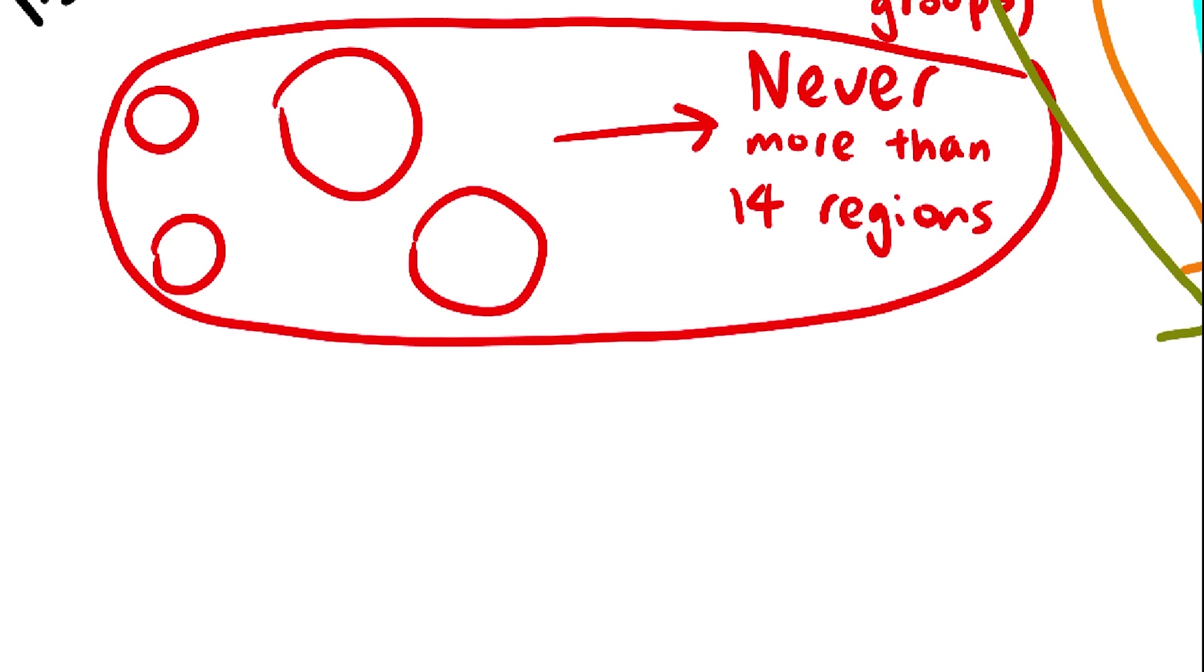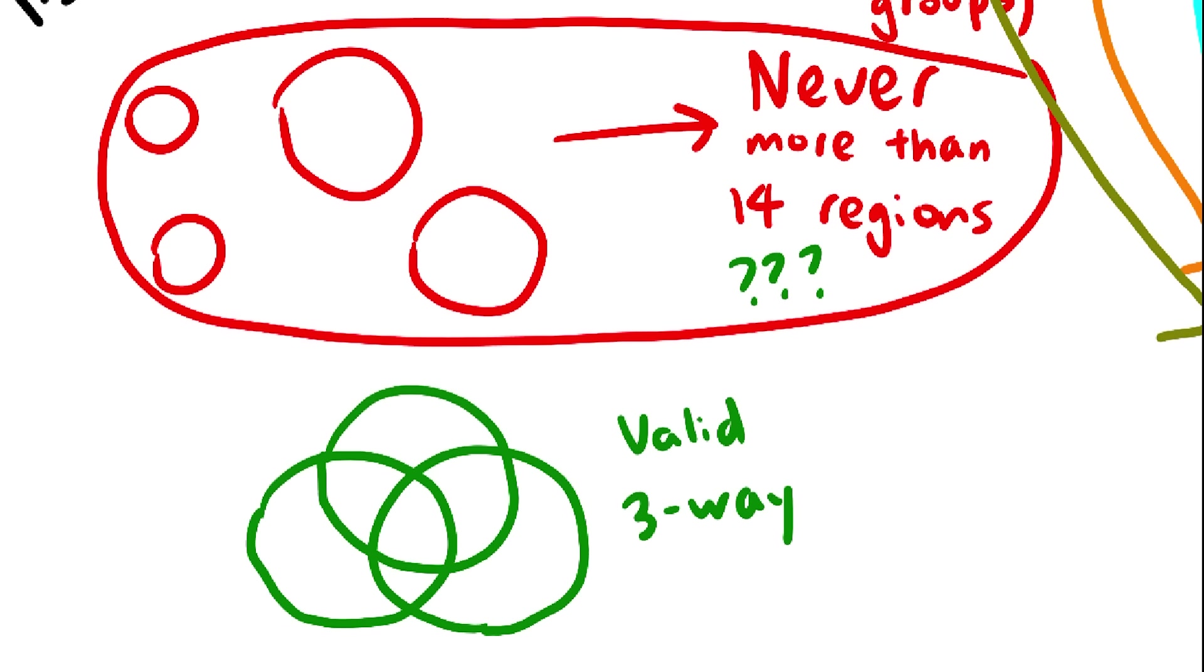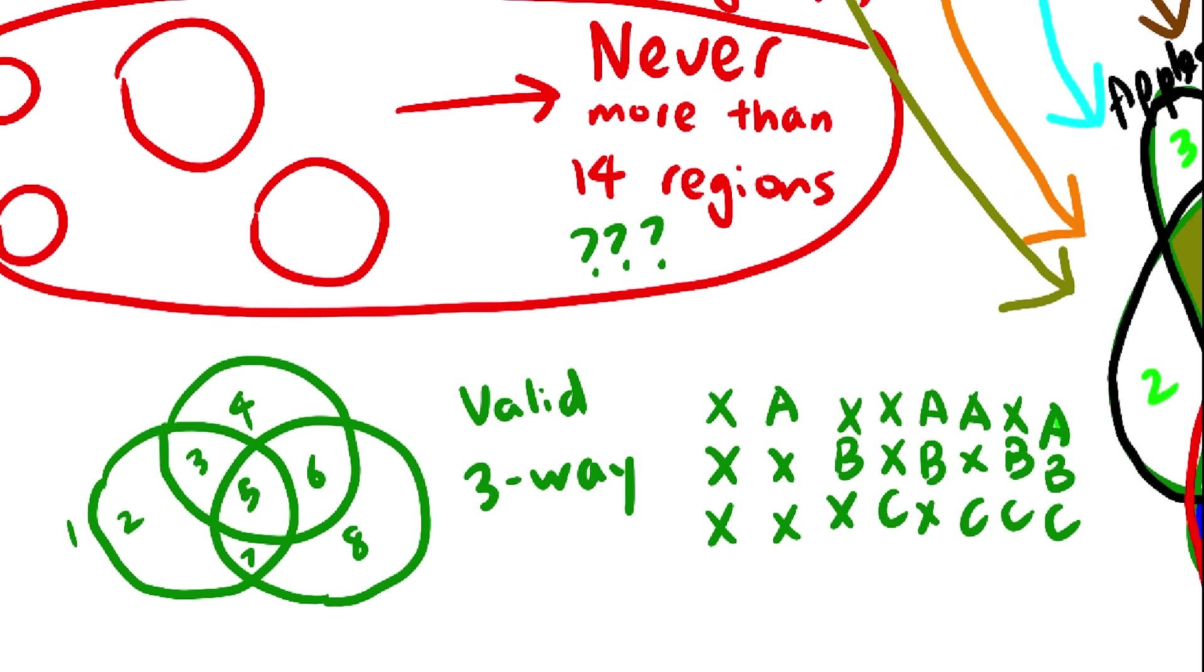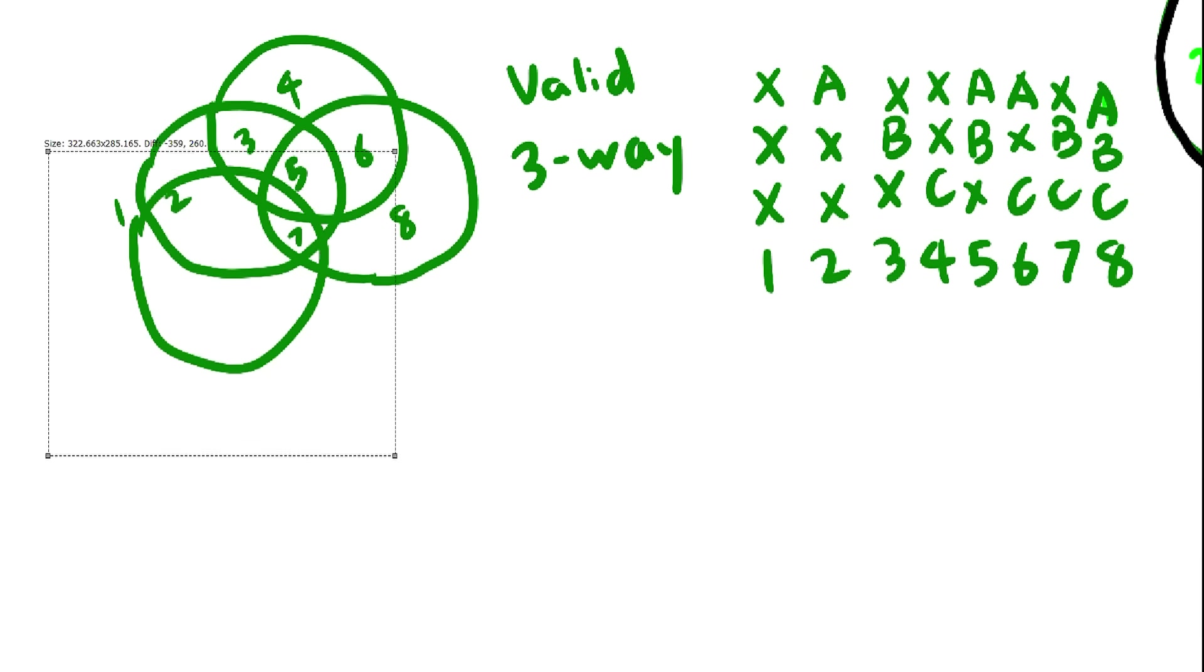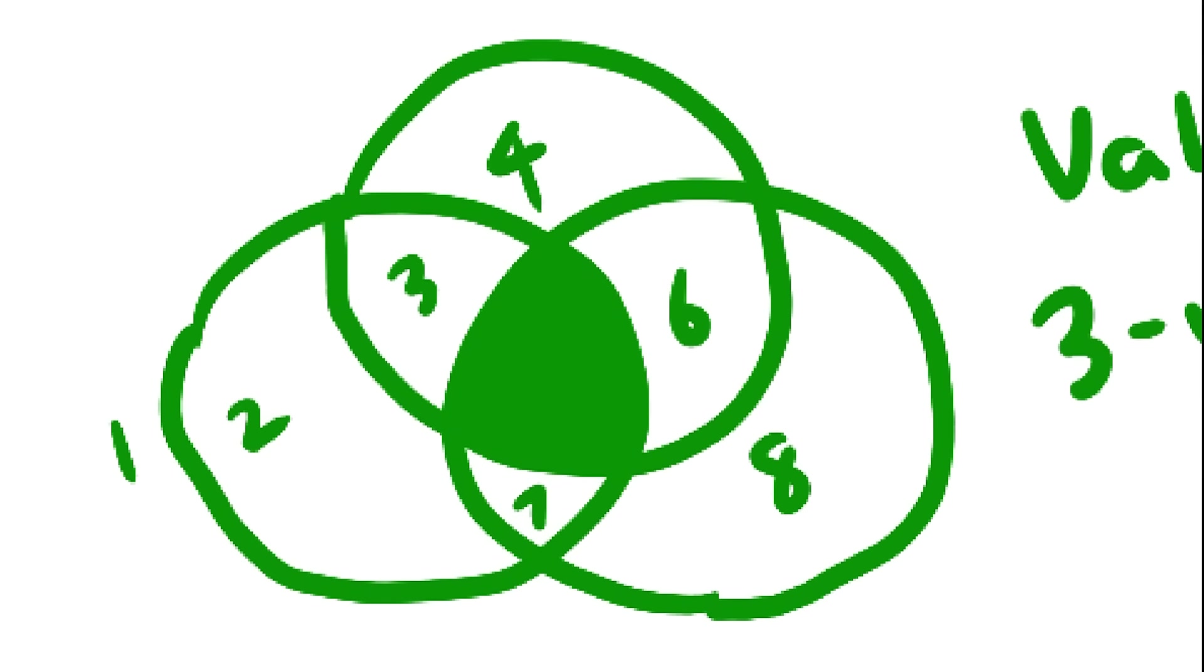So why can't you do this with circles? What's stopping you? We already have a 3-way Venn diagram here with circles. 8 regions, 8 combinations, 1 region for each combination, everything's fine. What's stopping you from just adding another circle? Focus on one of these 8 regions, we'll pick the one in the middle. This one happens to represent people who like all 3 foods, apples, bananas, and carrots.